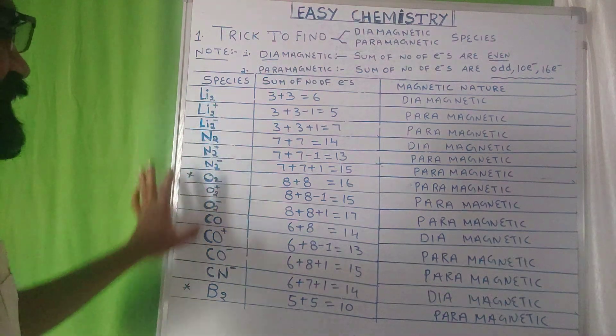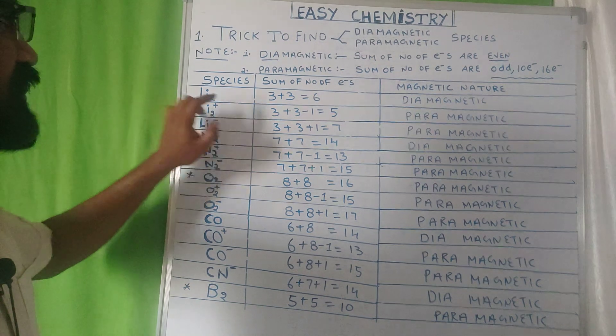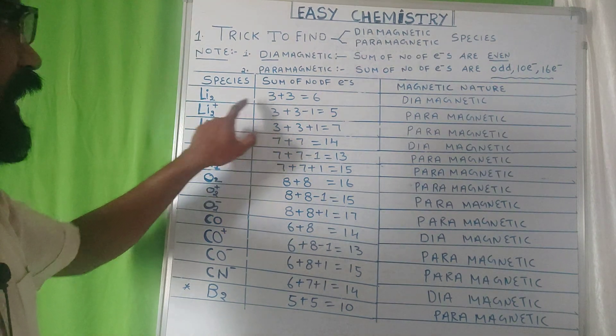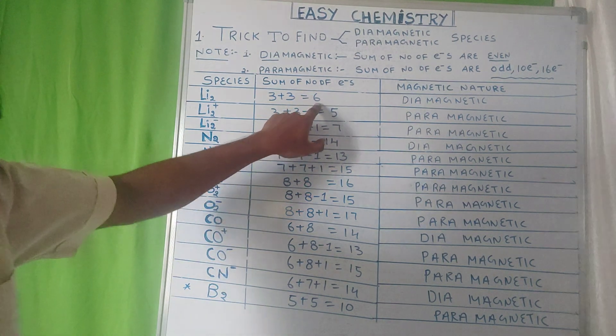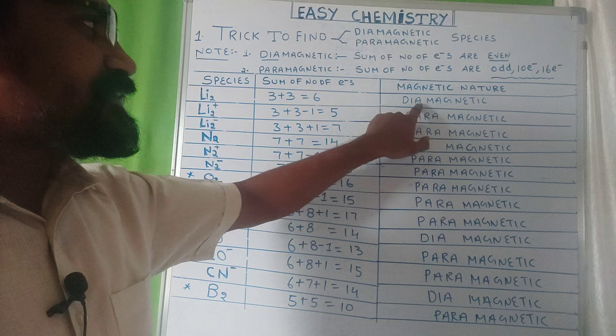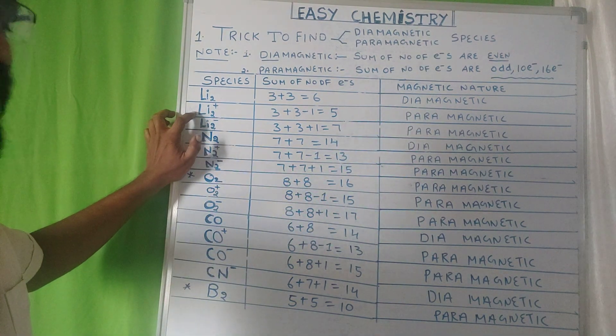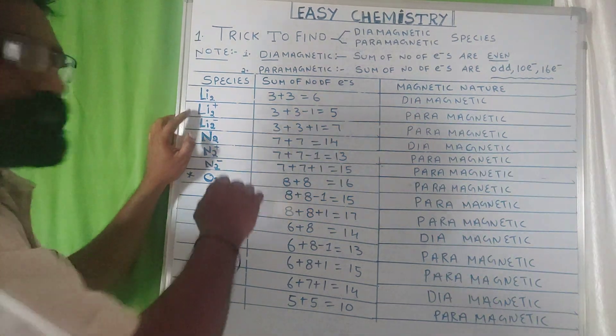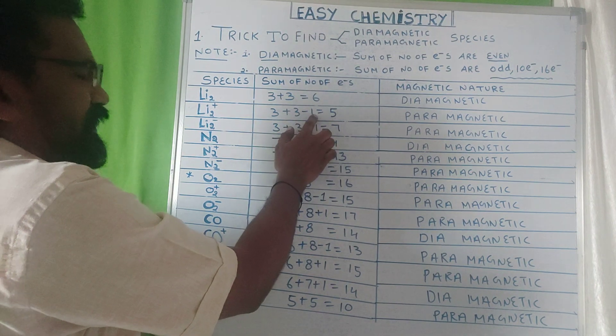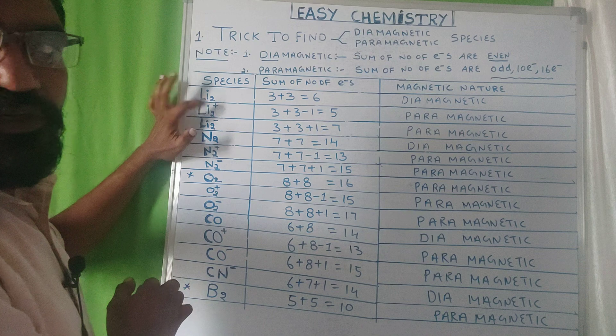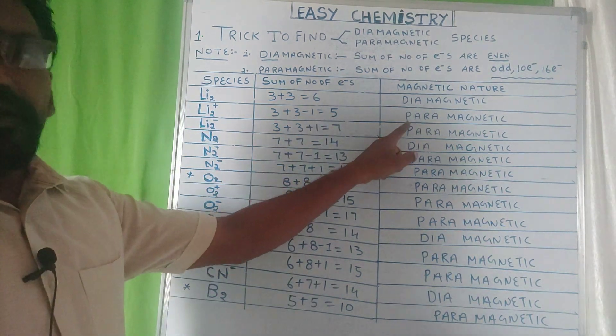If you see some examples, Li2: lithium atomic number 3, another lithium 3, 3 plus 3 equals 6. It is even number, so it has diamagnetic nature. If you see Li2 plus, 3 plus 3 minus 1 because it has positive charge, equals 5. It has paramagnetic nature.